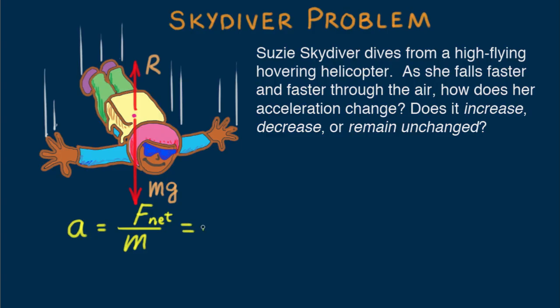Newton's second law guides us to the net force on Susie, which is mg minus R. We'll call the downward direction positive.